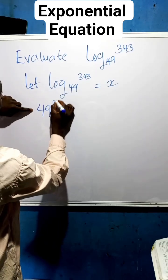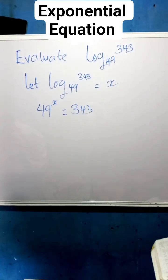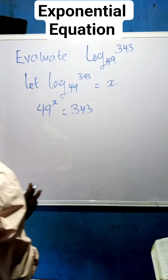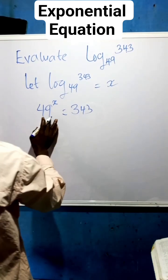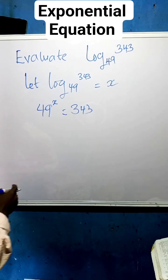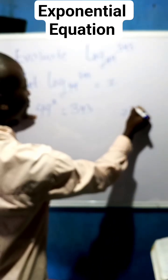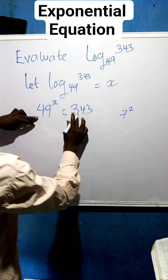Having done this, the next step we are going to follow is to put these two numbers in a way that we have the same base and different power. How do we do that? We can make 49 to be 7 squared, and we can make 343 to be 7 cubed.